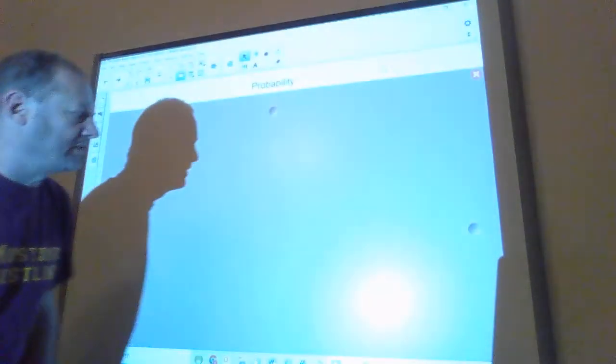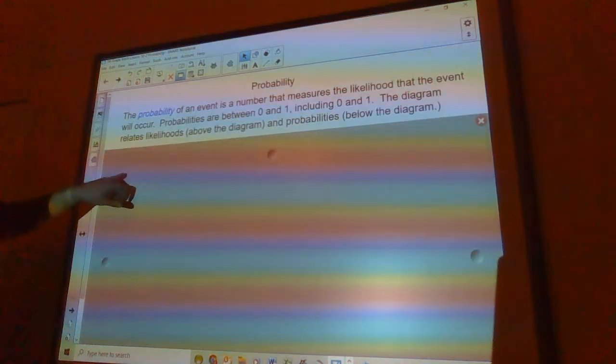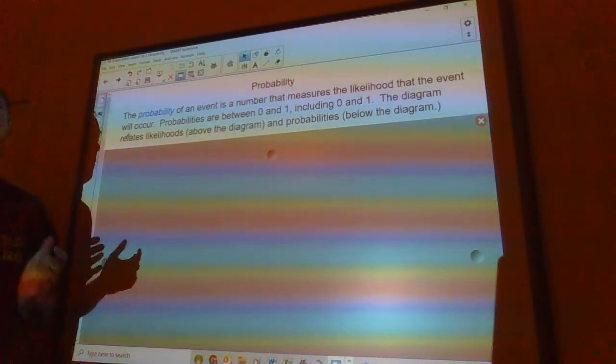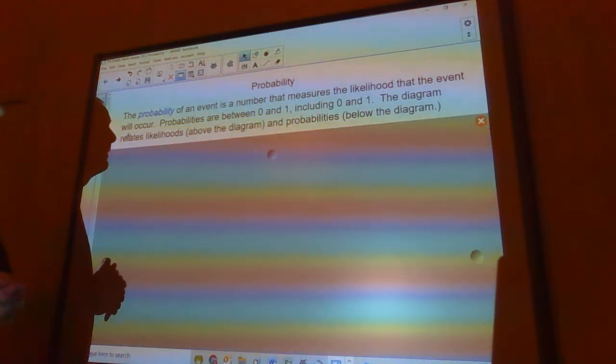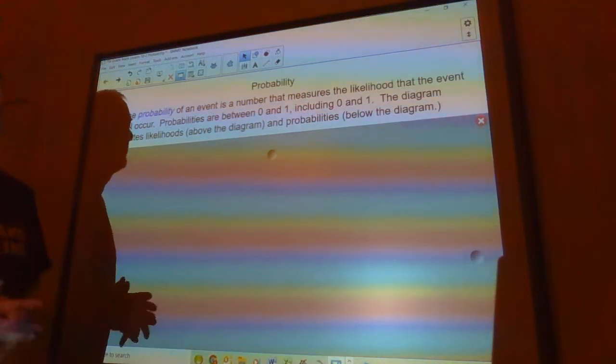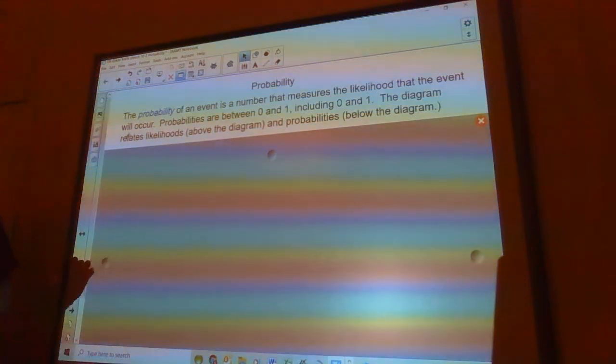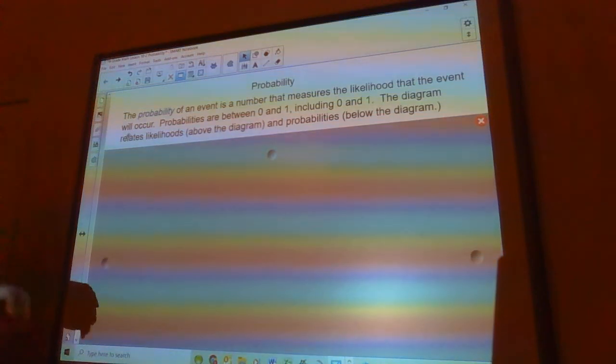Hello, everybody. Today we're going to talk a little bit about probability. The probability of an event is a number that measures the likelihood that the event is going to occur. Probabilities are always between 0 and 1, including 0 and 1. If the probability is 0, there is no chance of this thing happening. If the probability is 1, then it's going to happen. Somewhere in between there is where most things fall.